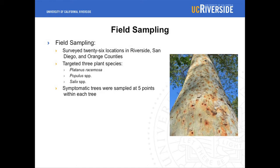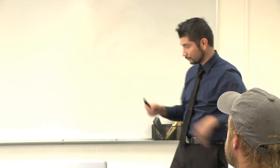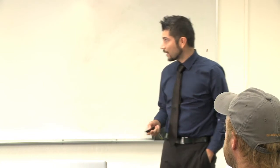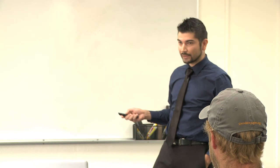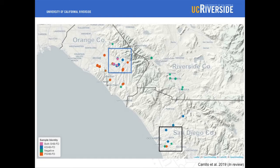We wanted to take this tool to the field. We surveyed 26 locations in Riverside, San Diego, and Orange Counties — we chose these regions because it's that boundary area where we think there may be some overlap, to see if the tool can distinguish the two different complexes of fungi. We targeted three plant species: Platanus racemosa, Populus species, and Salix species, mainly because those were available in city parks and riparian areas. Symptomatic trees were sampled at five points within each tree, with at least five trees per location. The results show in San Diego County we found polyphagous shot hole borer in close vicinity with Corotio shot hole borer, and in the Lake Forest area, they exist in pretty close quarters.